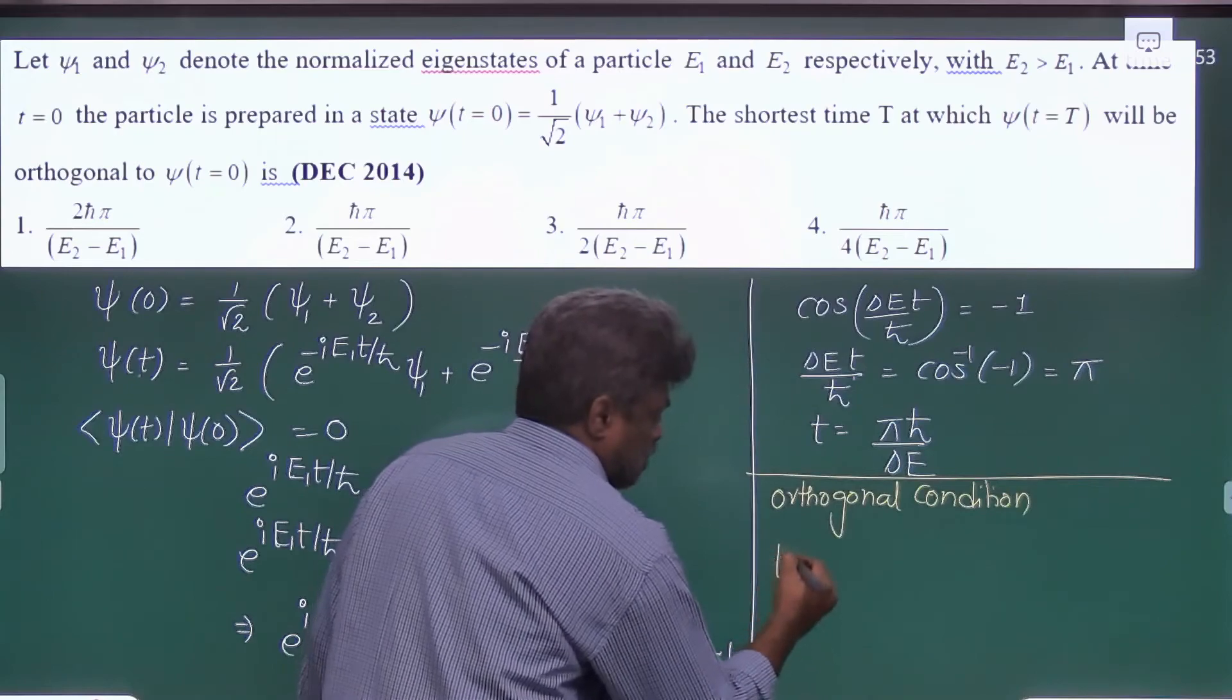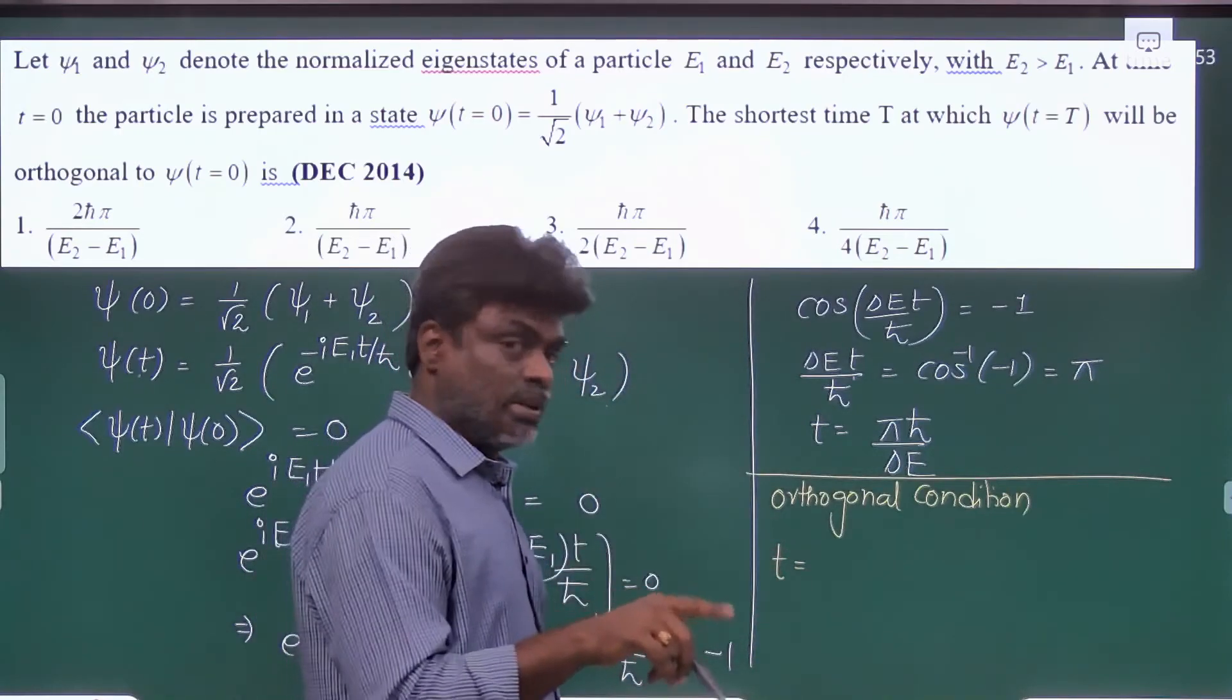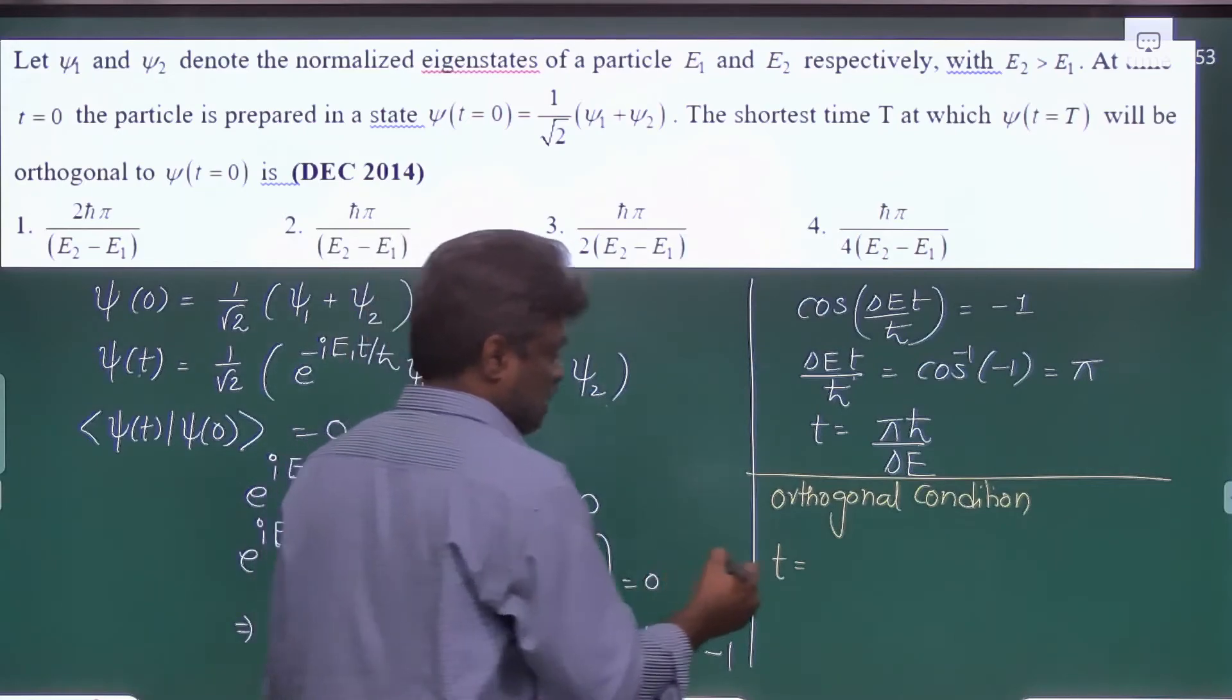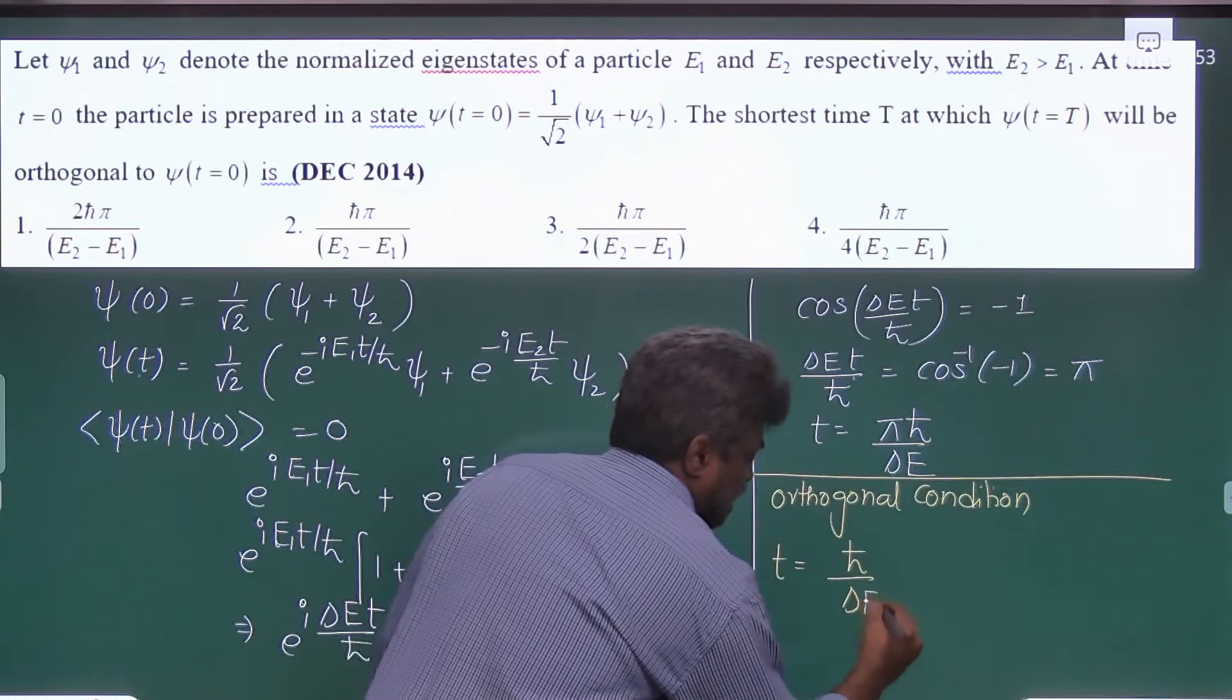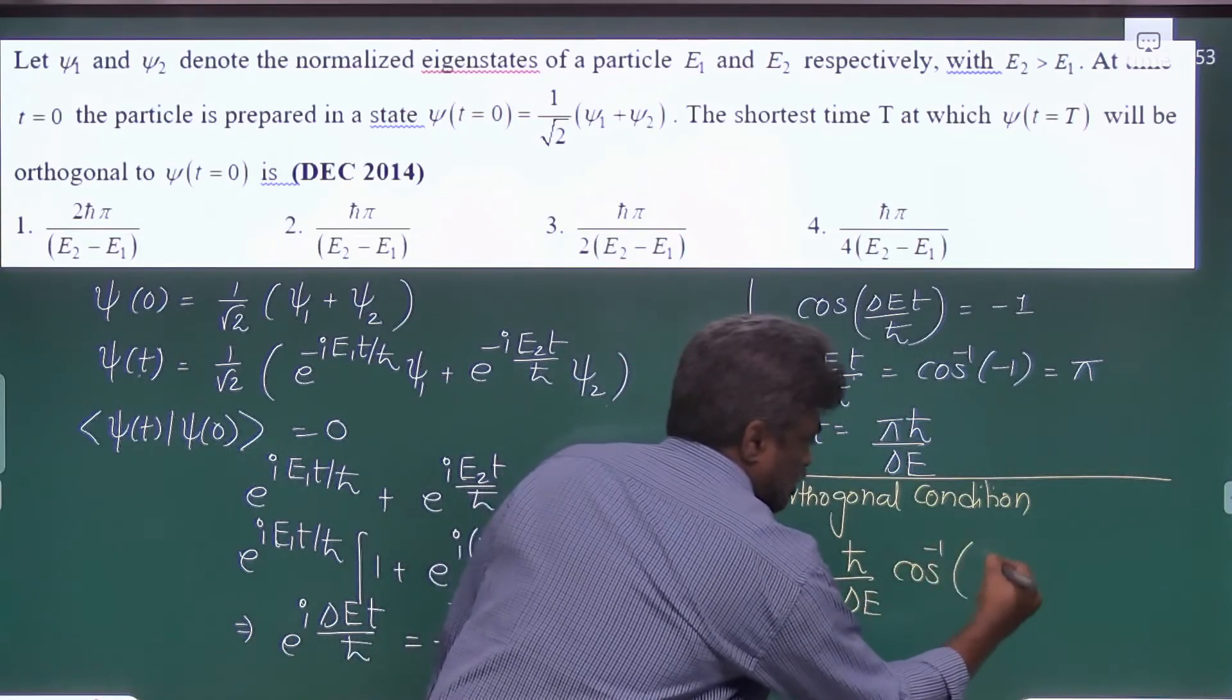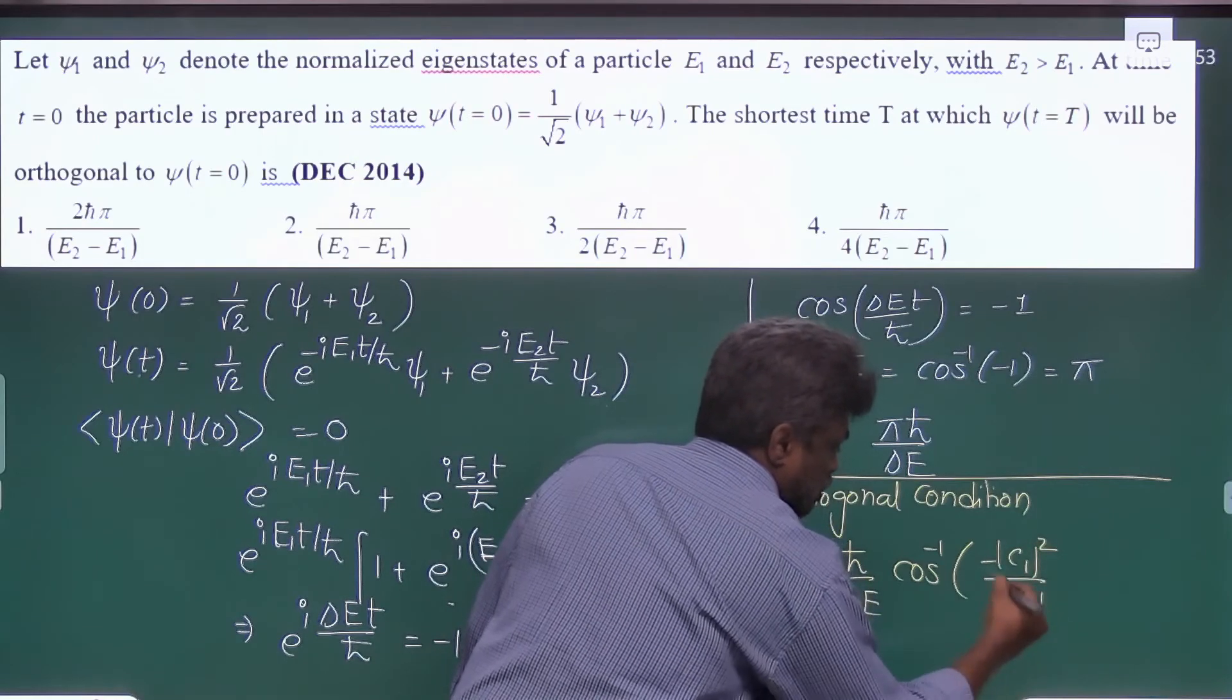The time t is given by—that means the time at which the wave function becomes orthogonal to the initial state—we can write it as h cross by delta E cos inverse minus c1 mod square by c2 mod square.